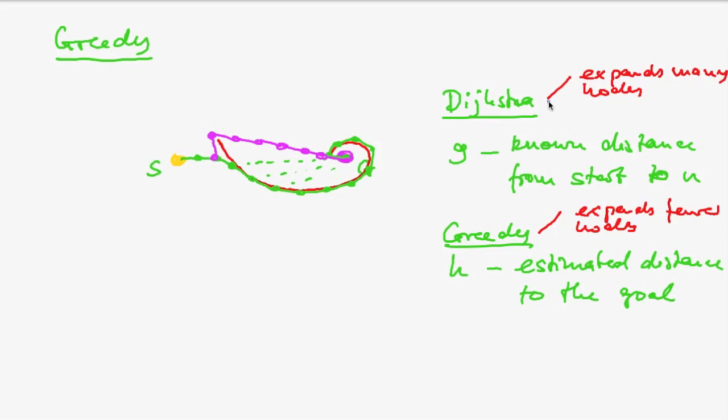However, the Dijkstra algorithm is guaranteed to find the optimal solution, whereas the greedy may deliver good results in general, but is not guaranteed to find the optimal solution.